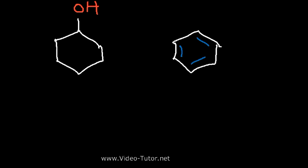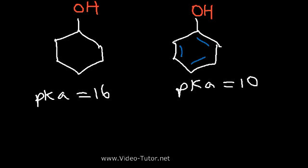Both of these molecules contain a hydroxyl group. The only difference is, phenol is part of an aromatic ring. It's attached to a benzene ring. Now which of these molecules is more acidic? Is it the one on the left, or the one on the right? The pKa for cyclohexanol is roughly around 16. It's very close to ethanol. But for phenol, it's much more acidic. The pKa is 10, which means phenol is a stronger acid.